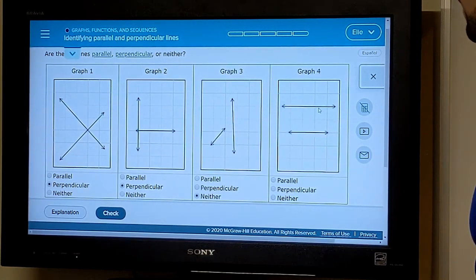These two lines both have a slope of zero. They're just horizontal lines, and they will never intersect. So these two are parallel.